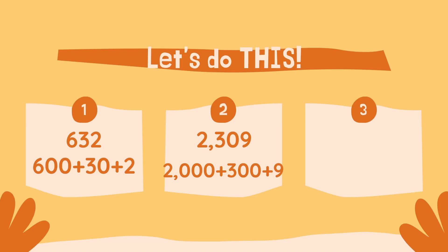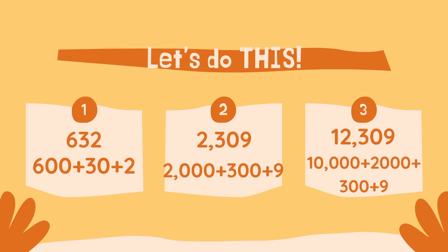And now you know: when you have a zero, it doesn't have a value, so you can just leave it out of your expanded form. All right, one more to go. It is 12,309. What would that look like in expanded form? It would be 10,000 plus 2,000 plus 300 plus 9.